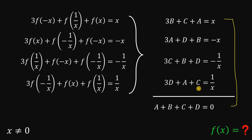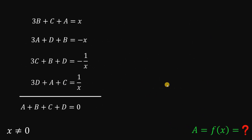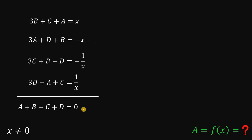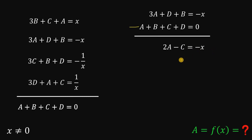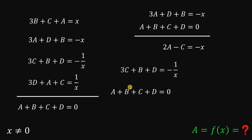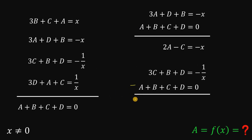Keep in mind that we want the value of a, because a is our f of x. Using the second equation and the result a + b + c + d = 0, we subtract to eliminate d and get: 2a minus c = negative x. Similarly, using the third equation and subtracting, we eliminate d again and get: 2c minus a = negative 1 over x.